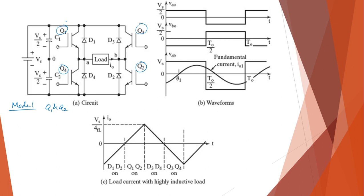When Q1 and Q2 are turned on, your supply starts, it passes through Q1, flows through your load, then through Q2 and back to the supply. So you are getting an output voltage and current of a certain polarity, and this is taken as our reference polarity — positive voltage as well as positive current.